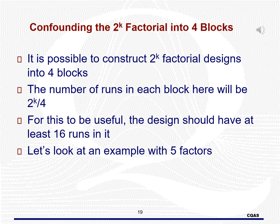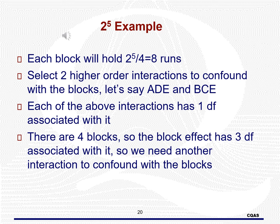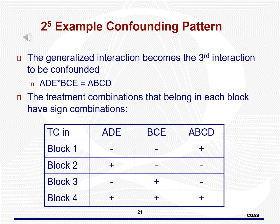We can also confound designs into four blocks. This is only worth doing if there are at least four runs in each block, so we would only do this at a minimum for 16-run designs. If we run a 2^5 design in four blocks, each block holds eight runs and we have three degrees of freedom for the block. This means we need two effects to confound the block with, and we get a third degree of freedom from the generalized interaction of those two effects. To decide which block each run belongs in, we find the plus-minus values for these interactions and place them accordingly.